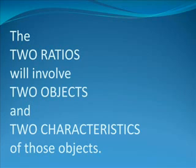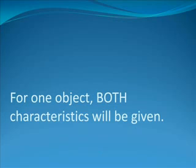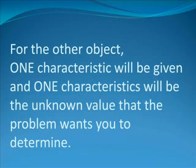The two ratios will involve two objects and two characteristics of those objects. For one object, both characteristics will be given. For the other object, one characteristic will be given and one will need to be found.